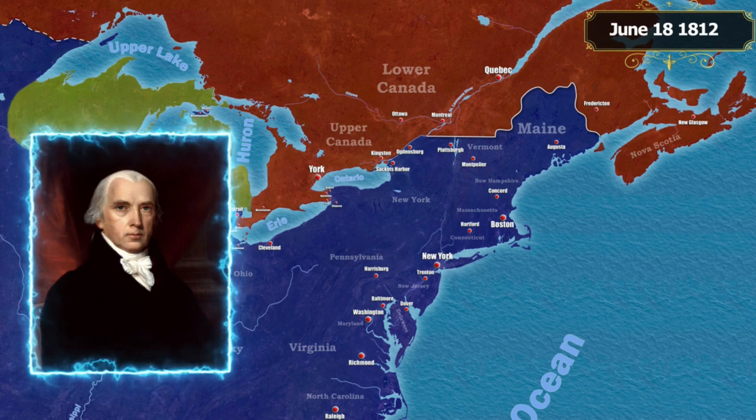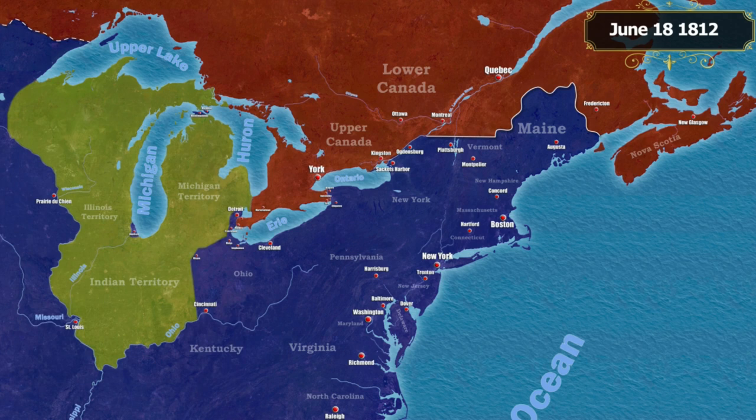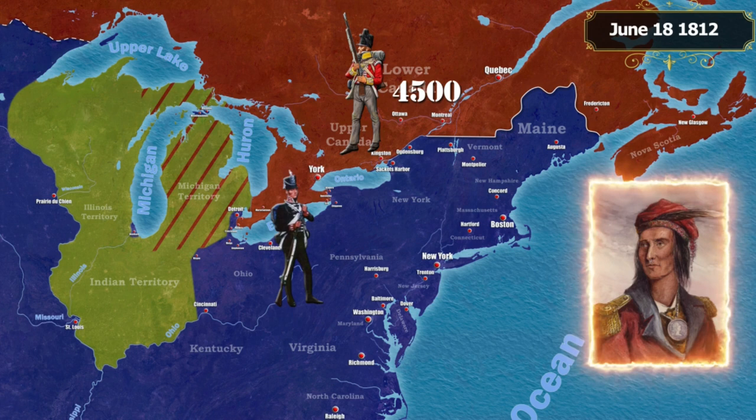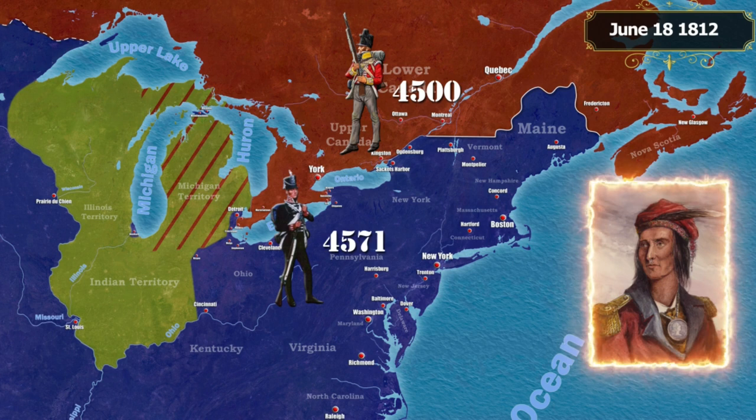After James Madison became the new President of the United States, hostilities began. The Governor General of Canada had only 4,500 soldiers at his disposal and decided to enlist the support of the confederation of Indian tribes headed by the leader Tecumseh. As for the U.S. Army, despite Congress passing a law to increase it to 35,000 soldiers, the actual number of American soldiers ready for battle was less than 7,000.